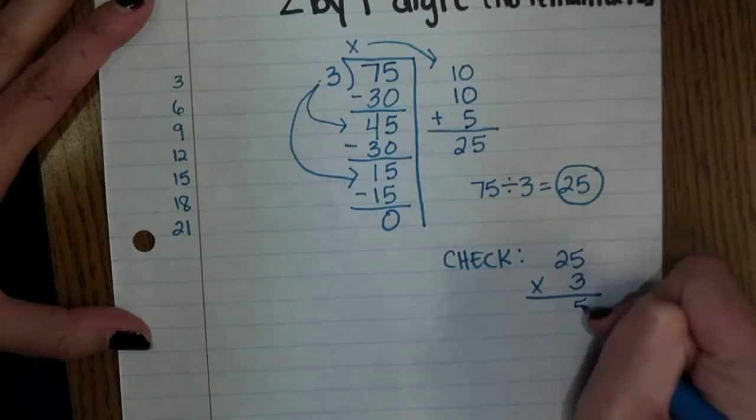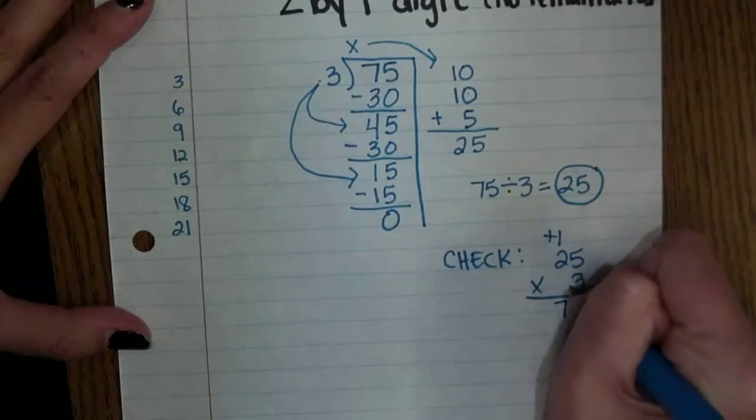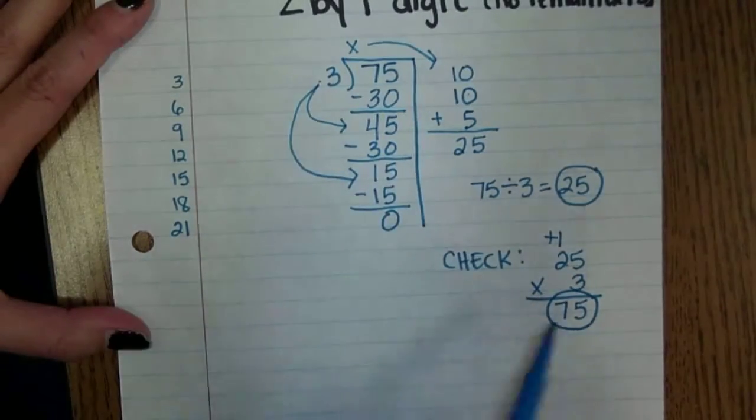3 times 5 is 15 plus my 1. 3 times 2 is 6 plus 1 is 7. So I started off with dividing 75 by 3 and that's what I have when I did this.